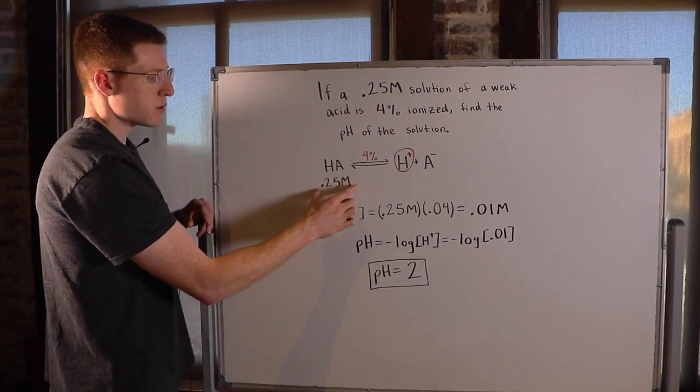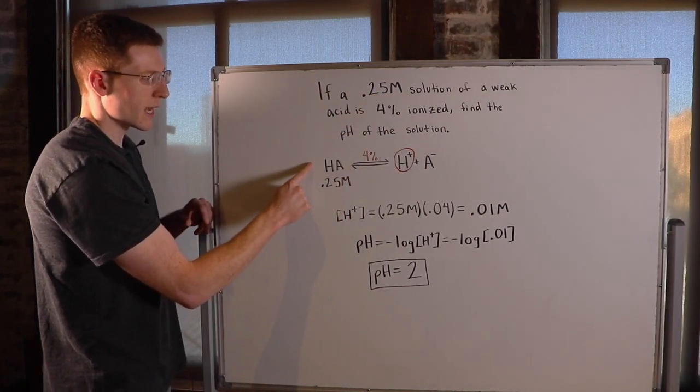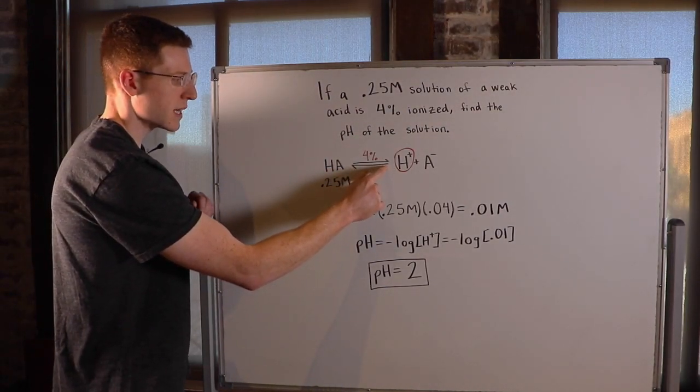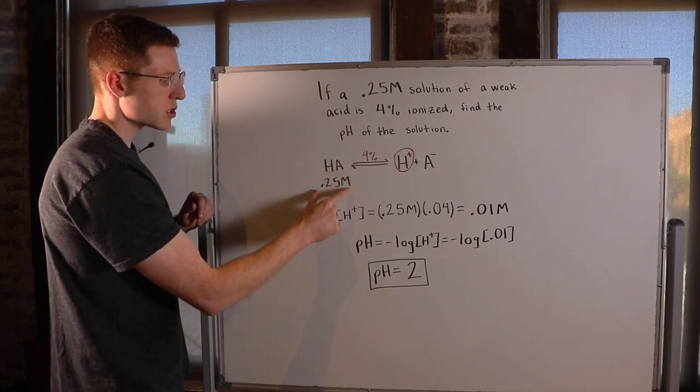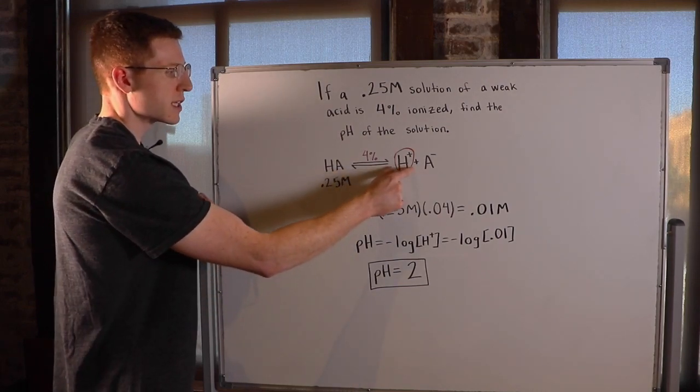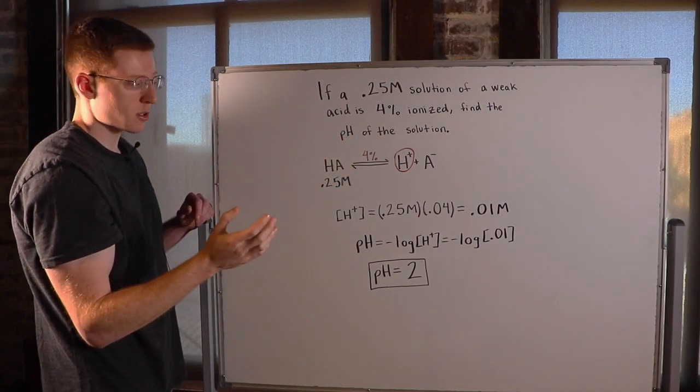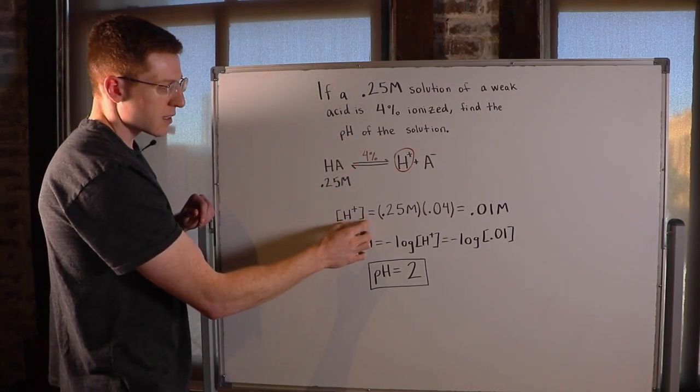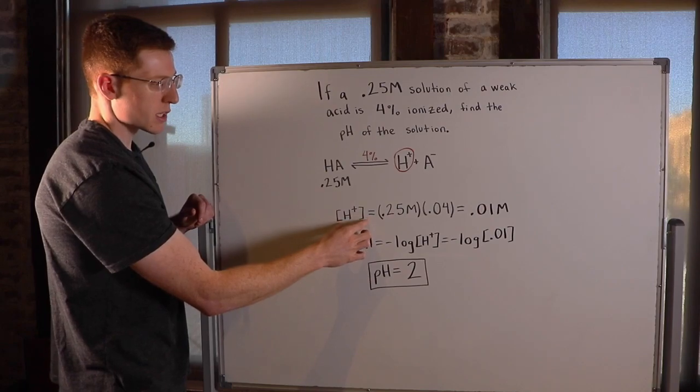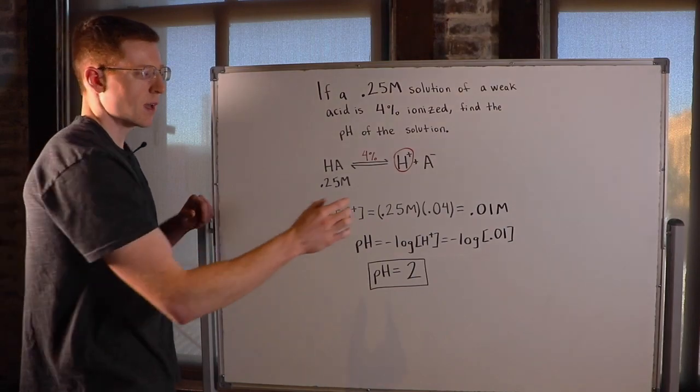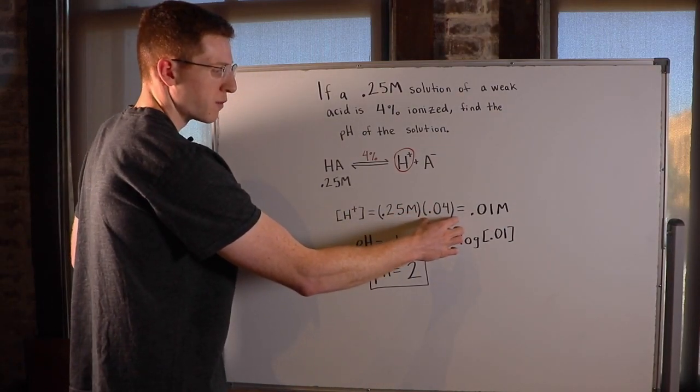So we know we started out with a 0.25 molar solution of the weak acid, and if it's going to dissociate or ionize 4%, then we can figure out how much of this solution is going to turn into H-plus, which really determines the pH of the solution. So let's find the concentration of H-plus by multiplying 0.25 molar, the original concentration of our weak acid, by 4% or 0.04.